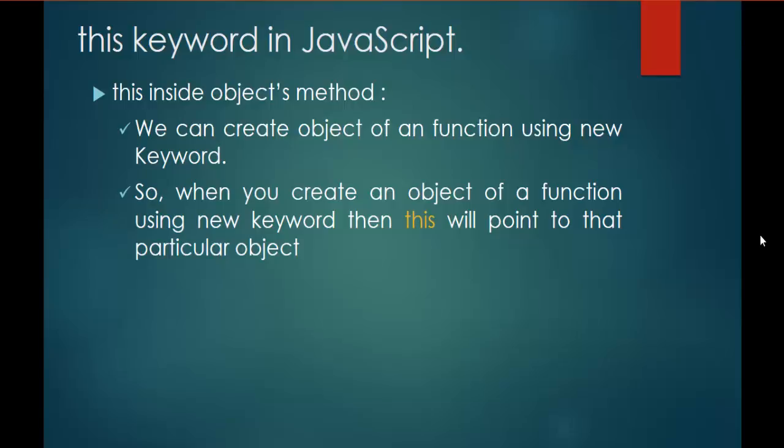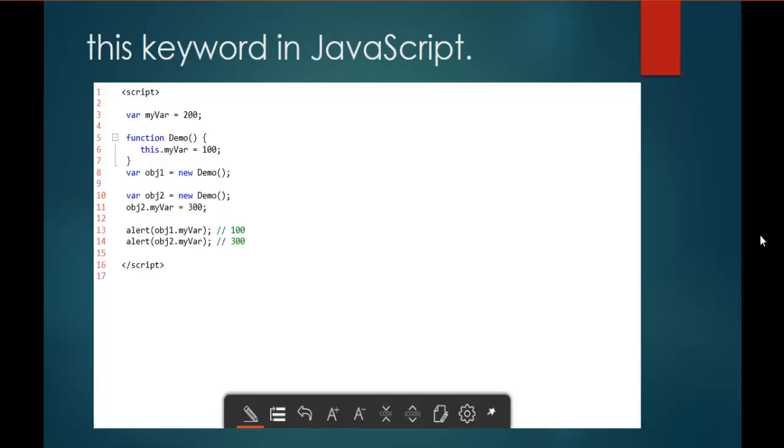Before that, let me tell you: suppose if you want to create an object of a function, then we can achieve that using the new keyword. When you create an object of a function using the new keyword, then the this keyword present inside that function will point to that particular object. To understand this very clearly, let me jump to the next slide.